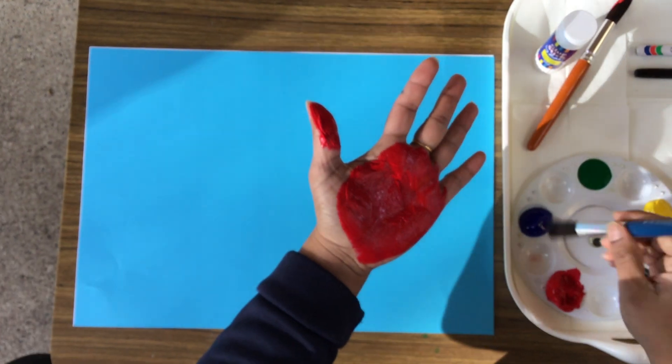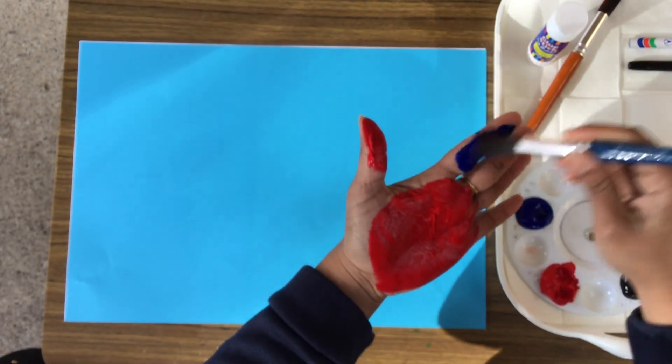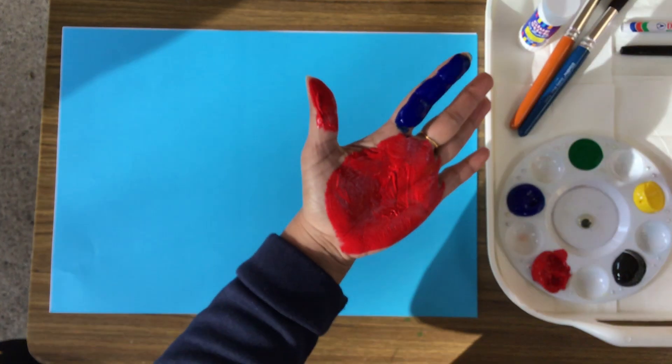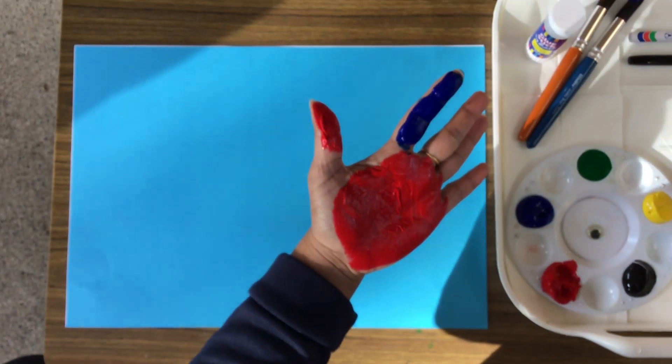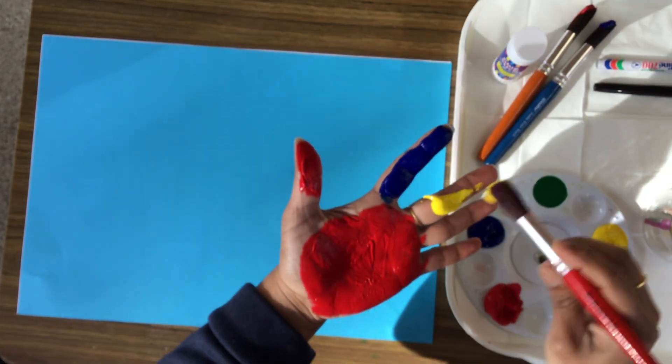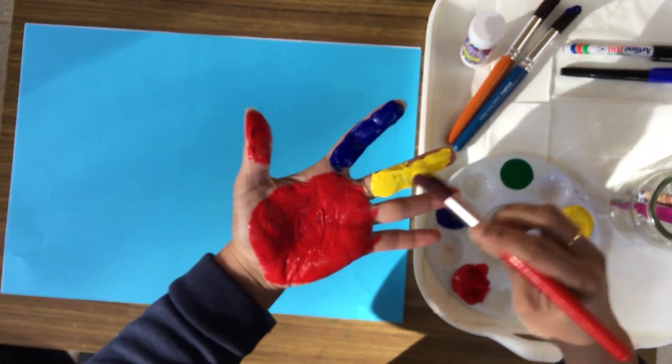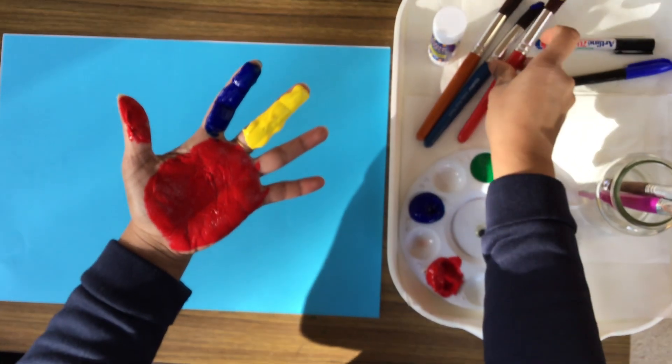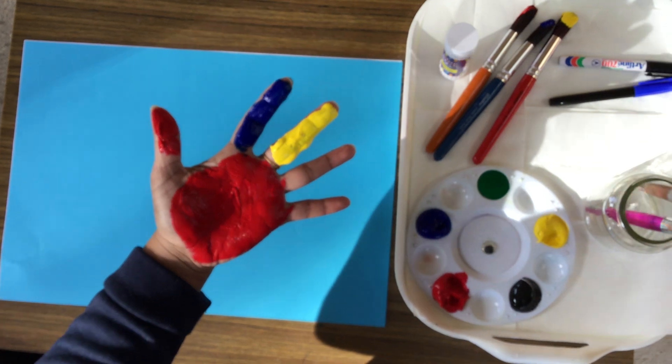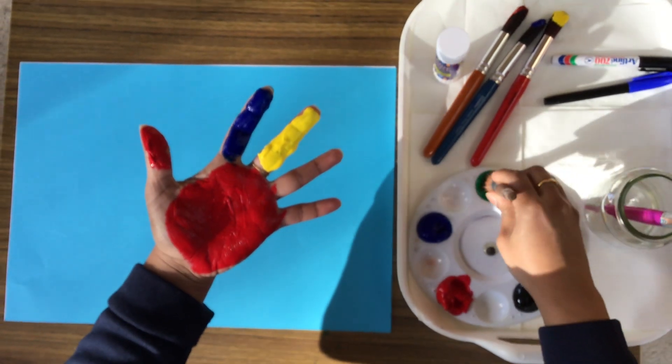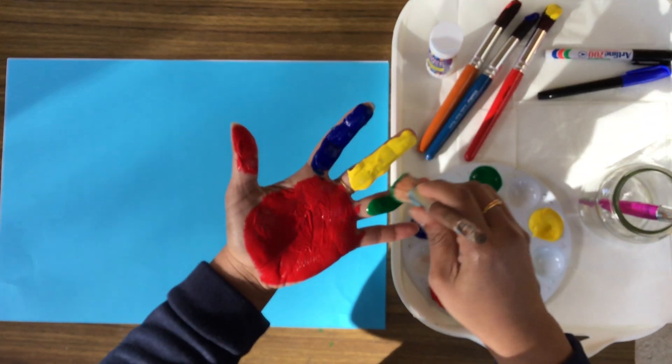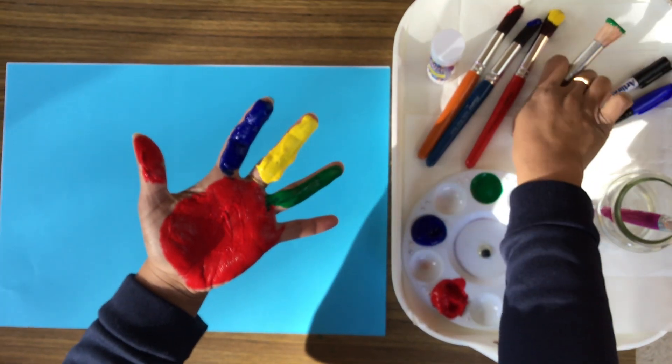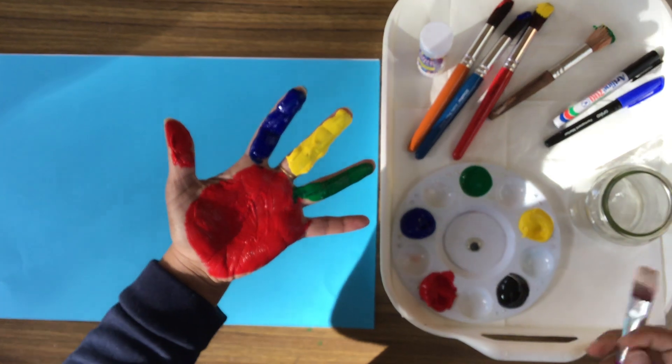And then you get some other colors. You can spread them on the fingers. Some yellow, and some green, and some black.